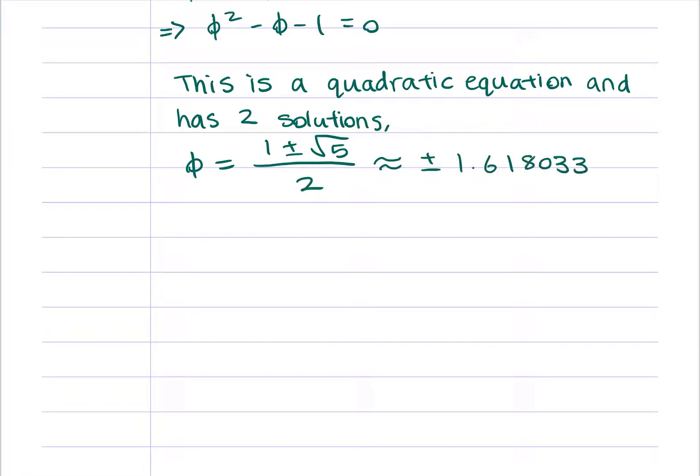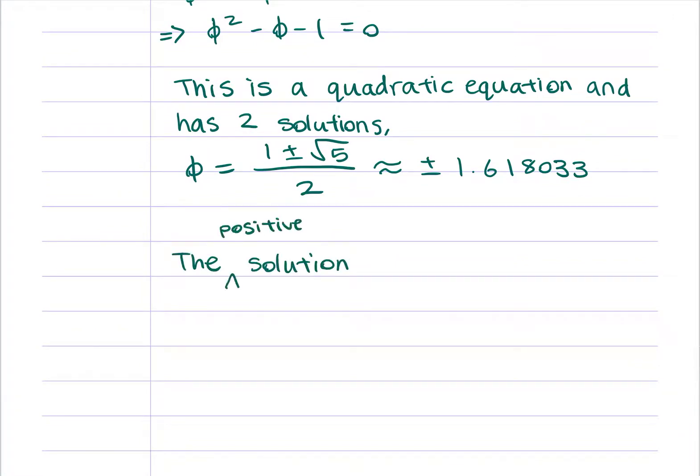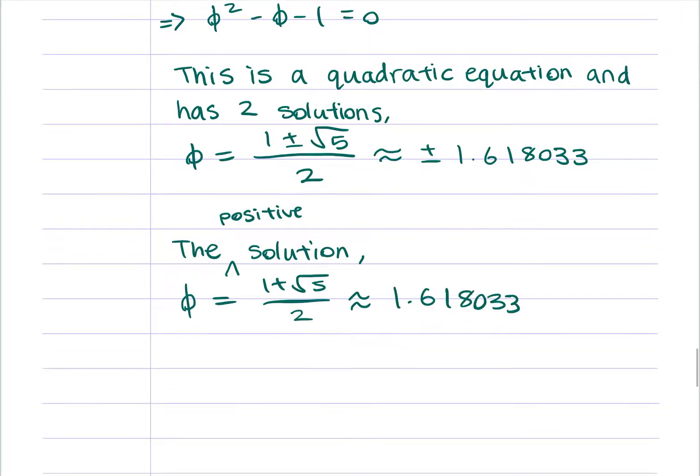The solution phi is equal to 1 plus root 5 over 2, which is approximately equal to 1.618033, is the golden ratio.